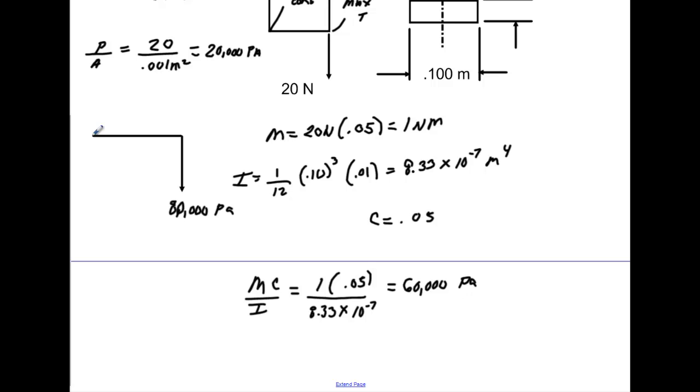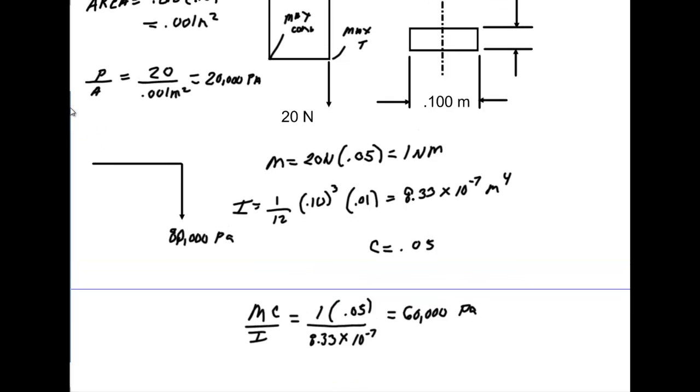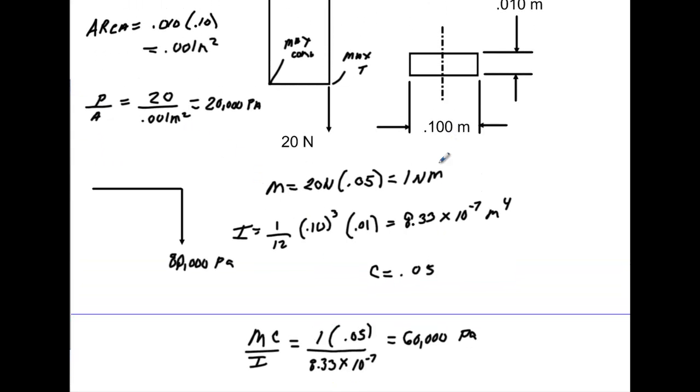Now, we know from here, what would happen would be, again, the c value is not going to change, but we'd have 60,000 in compression here, but 20,000 here. So, it would have 40,000 in compression here. That's compression. I'll make that in Pascals, too. But that would be in compression. This would be in tension.